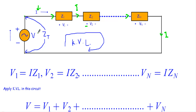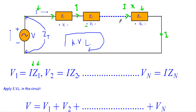The voltage V is divided into V1, V2, up to Vn due to the series combination. The voltage across each impedance is calculated by multiplying the impedance value by the current flowing through it — a simple application of Ohm's law for AC circuits: V1 = IZ1, V2 = IZ2, and up to Vn = IZn.